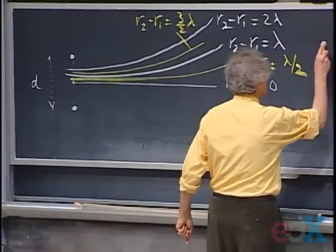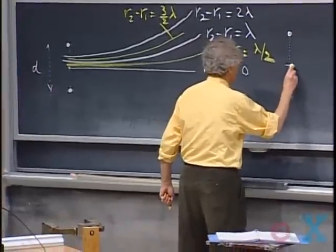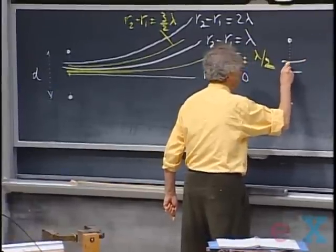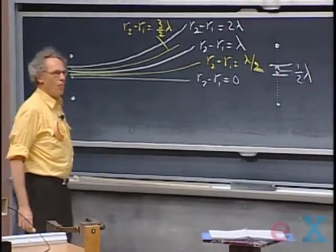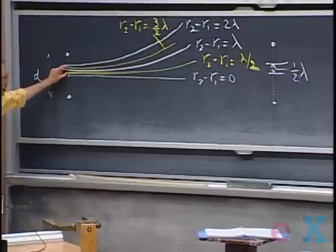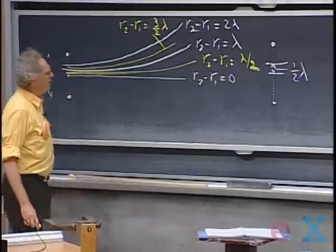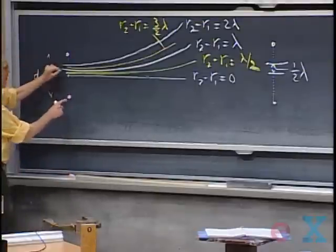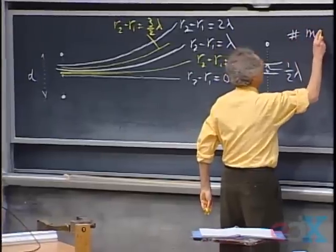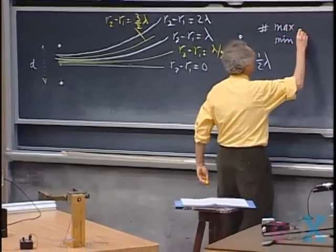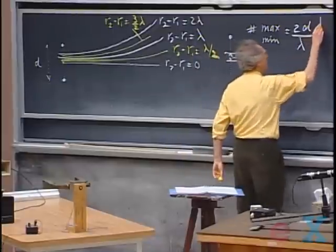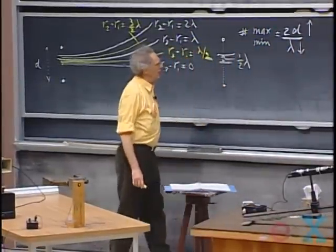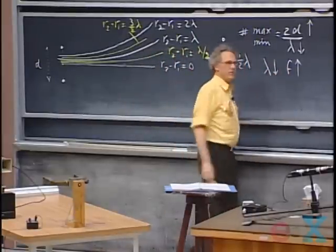The distance between two adjacent lines of maxima right between the two sources is one-half lambda. So the number of maxima — which is roughly the same as the number of minima — is approximately 2D divided by lambda. If you want more maxima, you can make D larger or make the wavelength shorter. You can shorten the wavelength by increasing the frequency, if you have that control.